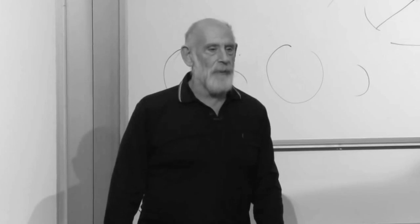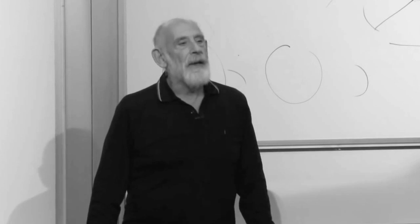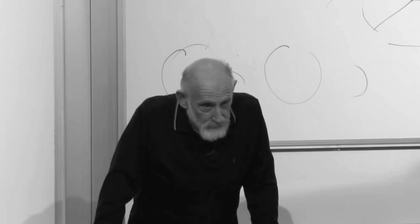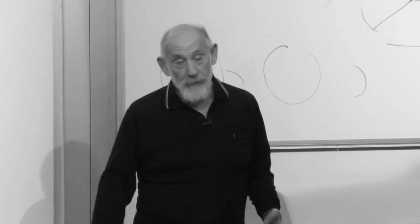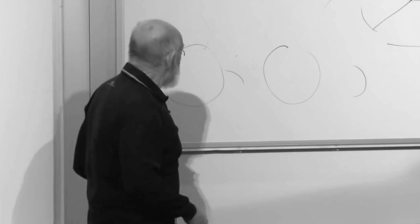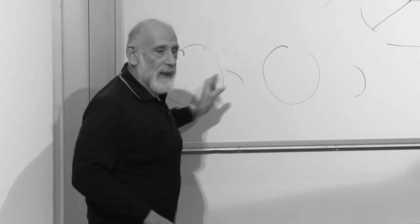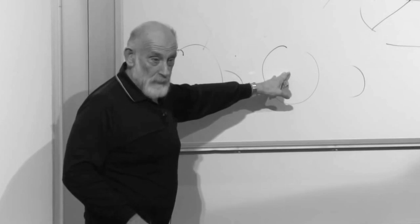Entanglement is not a thing which is either yes or no. It's a magnitude of entanglement. The magnitude is called the entanglement entropy, but it's basically a measure of how many entangled pairs are shared between the two sides.